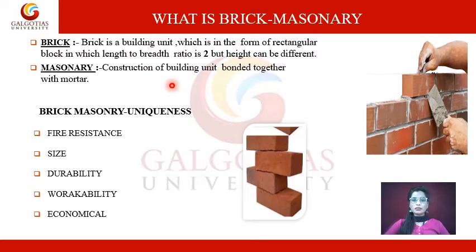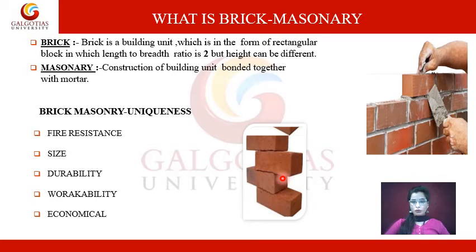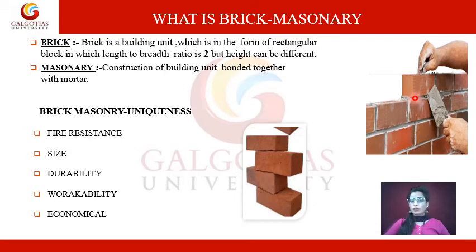Starting with what is brick masonry. A brick is a building unit in the form of a rectangular block. In the image, you can see the rectangular block in which the length to breadth ratio is two, but height can be different. Masonry refers to construction of building units — for example, brick or stone — bonded together with mortar, which can be cement mortar, lime mortar, or mud.